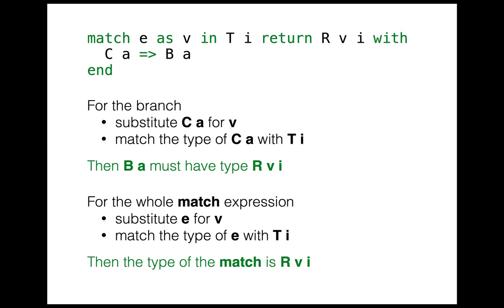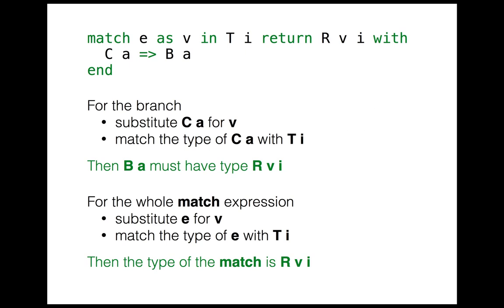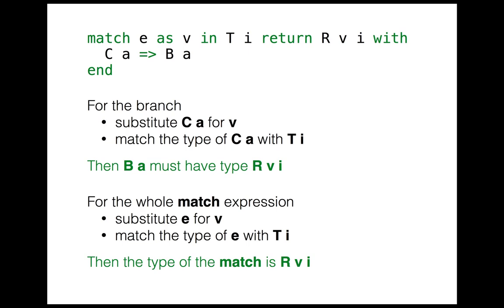The idea is that we have two slightly different procedures for determining the result type of the match, depending on whether we're looking at the match expression as a whole, or whether we're looking at the type of a particular branch. Different branches can have different result types, but when an expression does match a particular constructor, then the two procedures will give types that are compatible. We'll get into the details with some examples.